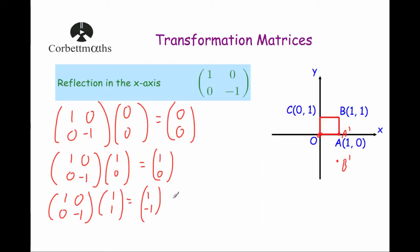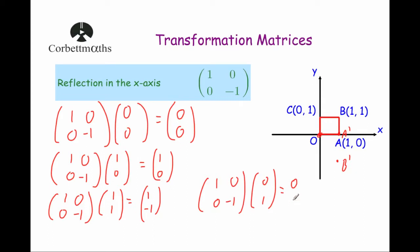And finally, the point C. If we multiply the transformation matrix 1, 0, 0, minus 1 by the point C, which is 0, 1: 1 times 0 is 0, 0 times 1 is 0, add them together is 0. And the second row times the column: 0 times 0 is 0, minus 1 times 1 is minus 1. So C will move to the point 0, minus 1 — C dash will be there. And if we join up the vertices, that will be our unit square. As you can see, it's reflected in the x-axis. So the transformation matrix for reflection in the x-axis is the matrix 1, 0, 0, minus 1.